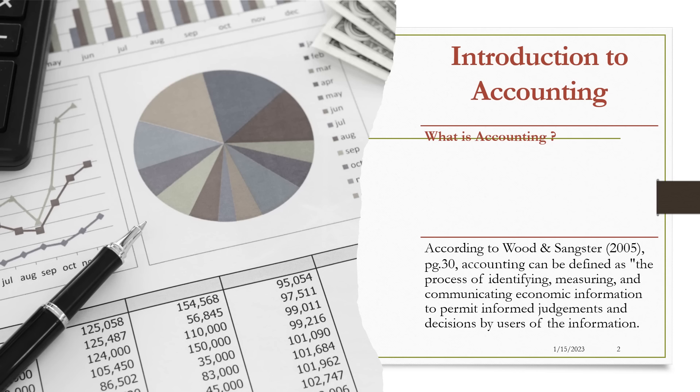Accounting is not only about money; we can give an account for stock, but at the end of the day the stock values something, so it has a monetary value. According to Woods and Sangster, 2005, as we look at this first slide on page 30, they define accounting as the process of identifying, measuring, and communicating economic information to permit informed judgment and decisions by users of the information.